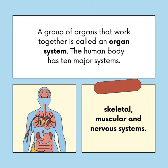A group of organs that work together is called an organ system. The human body has ten major systems: skeletal, muscular, and nervous systems.